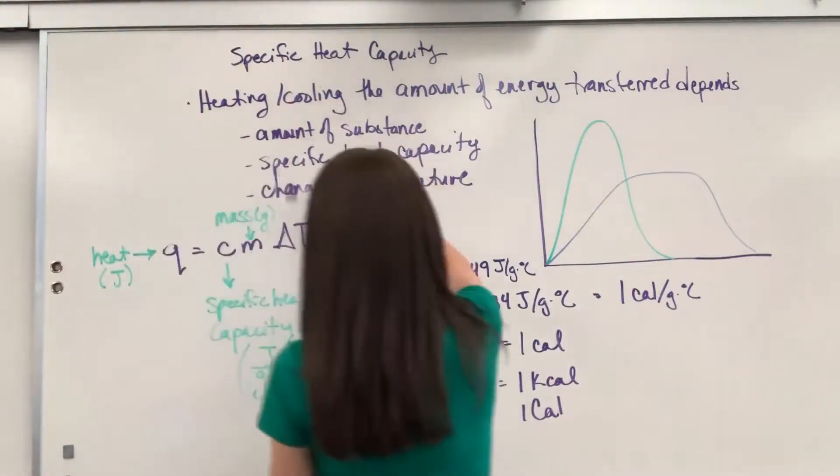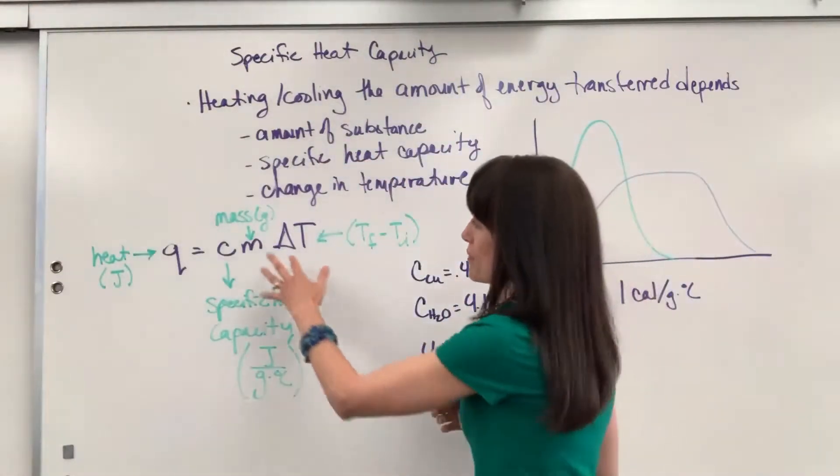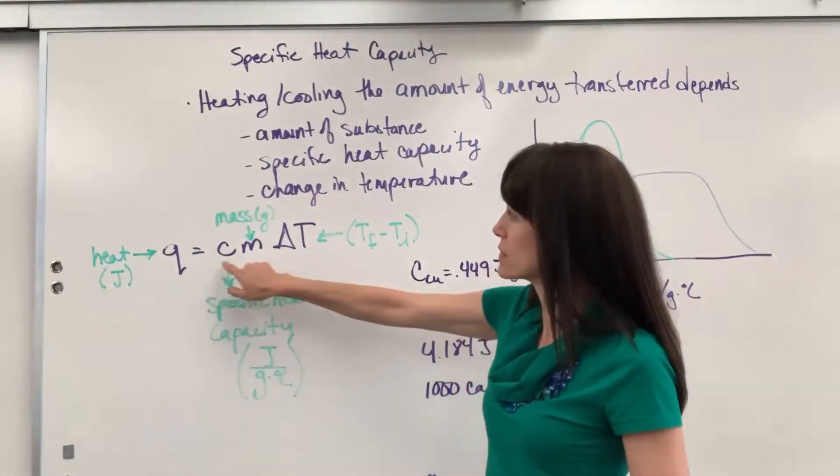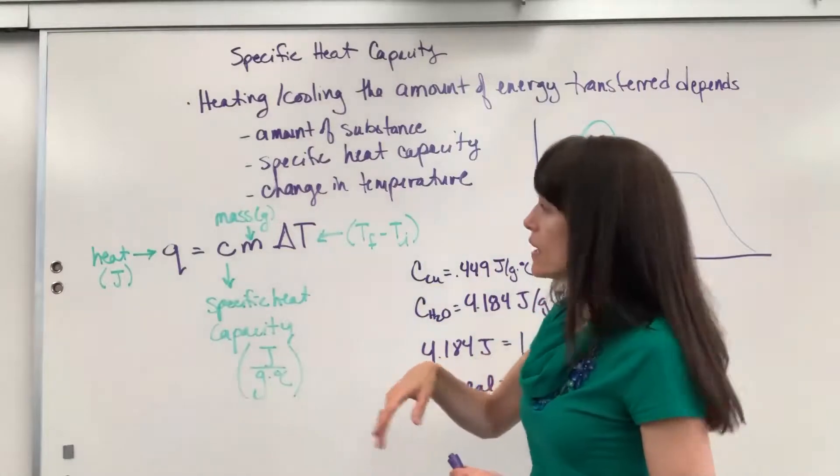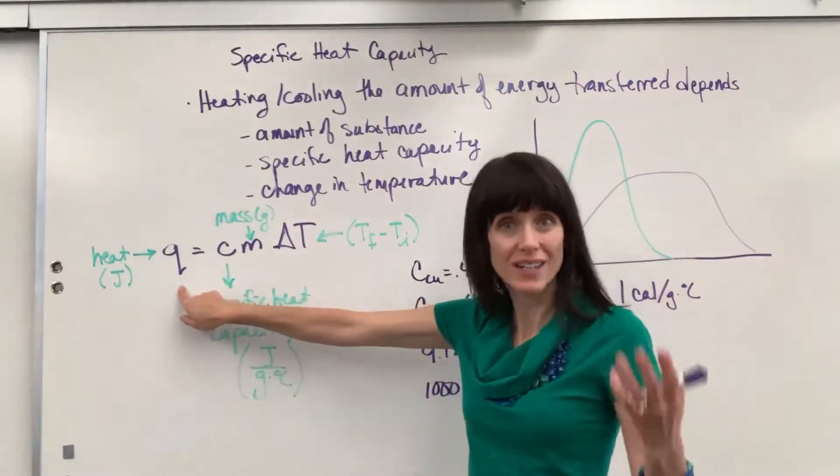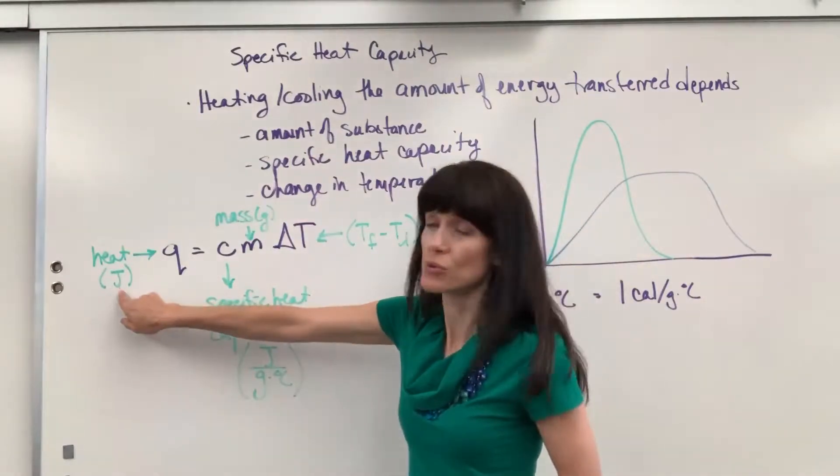Now these three items are embodied in one formula. Our specific heat formula is Q equals Cm delta T, and I've labeled for you what all of these represent. Of course Q, that's our heat, and that's going to be in joules.